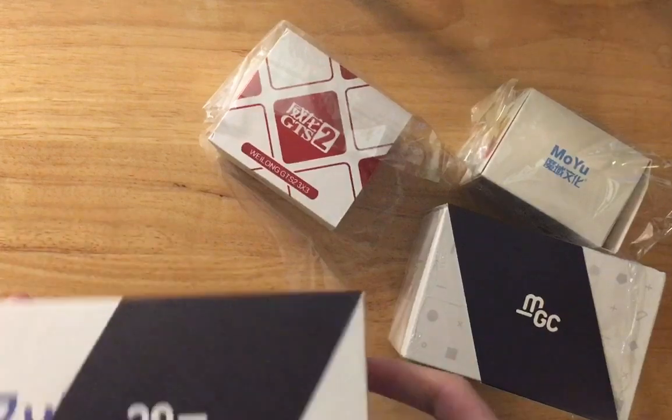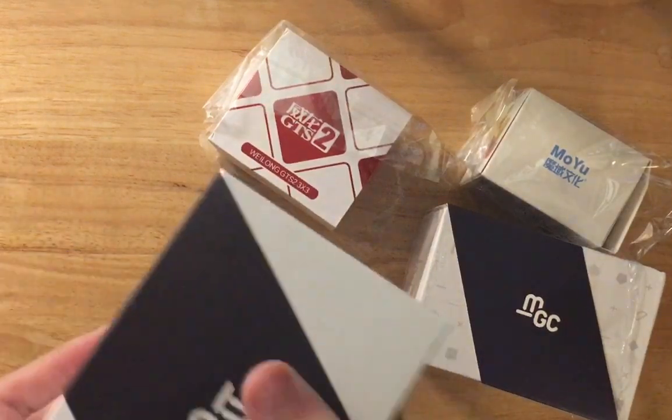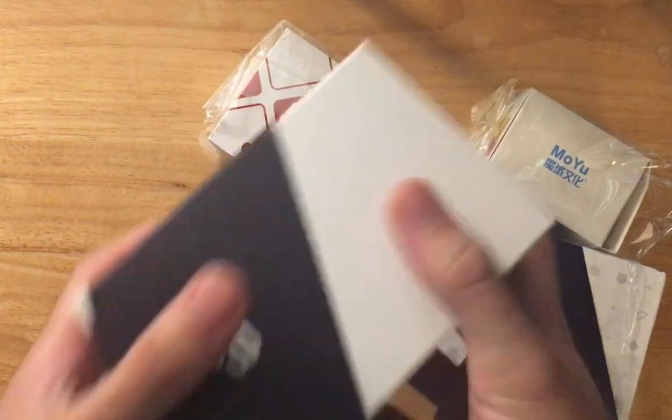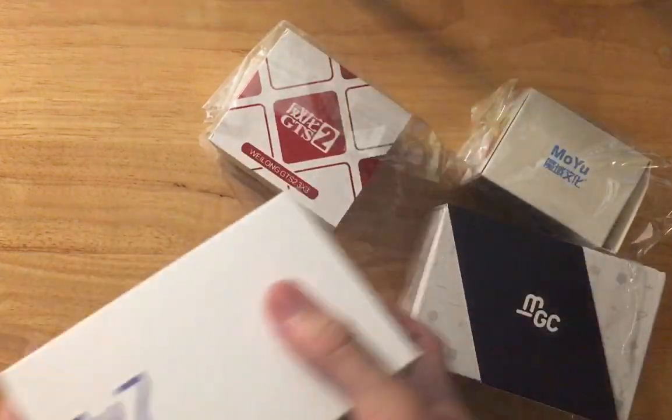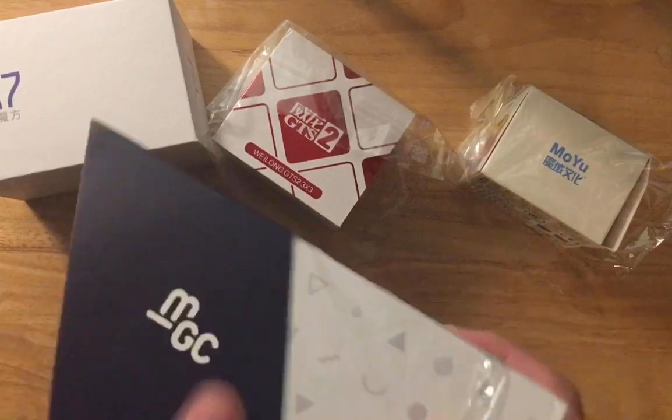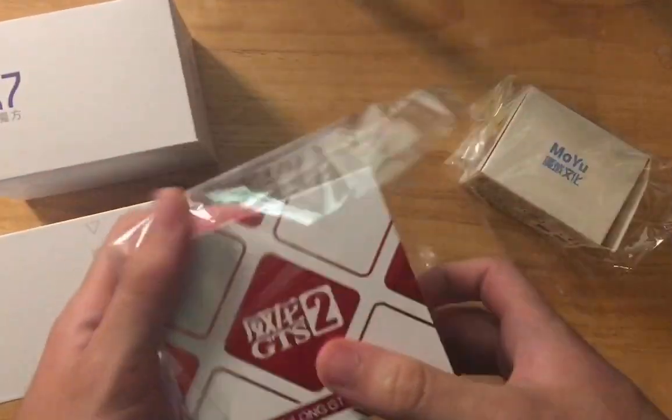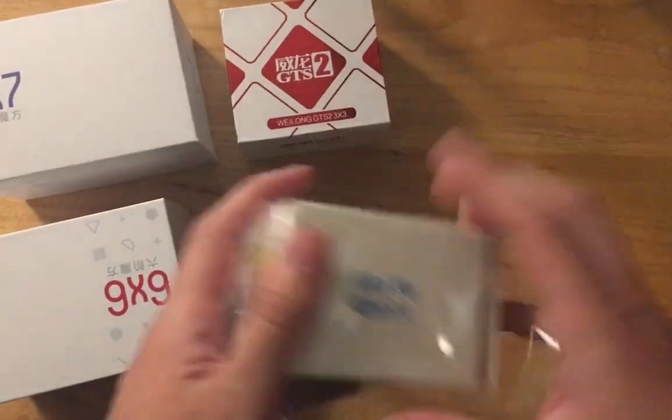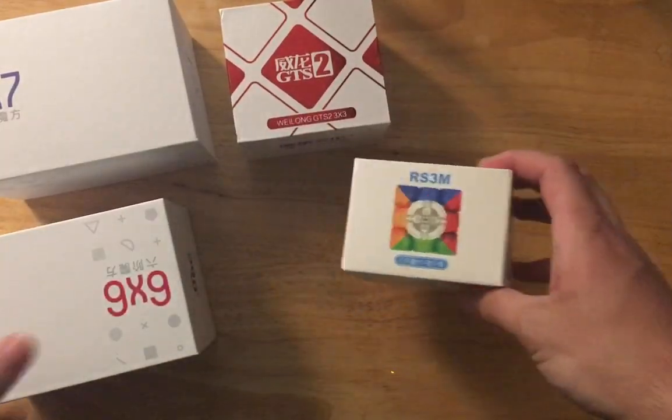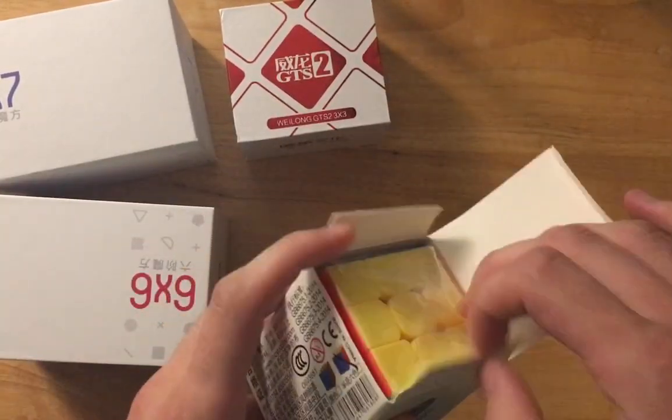I'm really excited about these. I haven't opened these up yet, as you can tell, but this packaging looks a little bit worse for wear. This is the 7x7. Is this on the outside? Interesting. So this must be the 6x6 GTS and the RS3M. The packaging is pretty easy to take off.